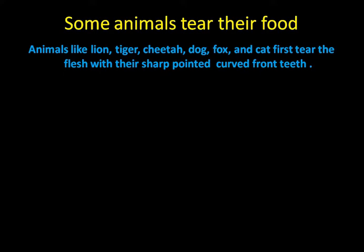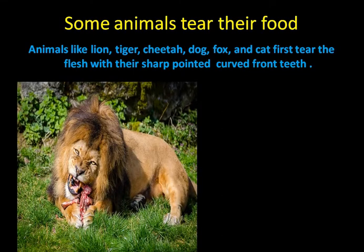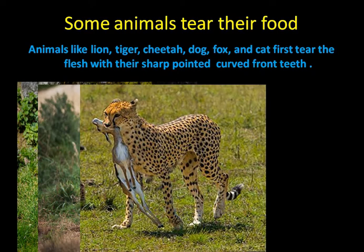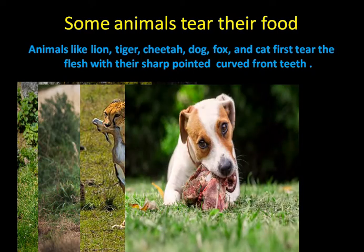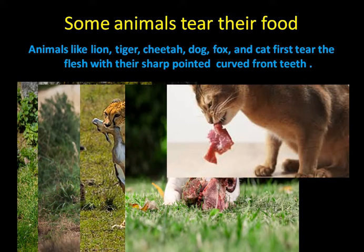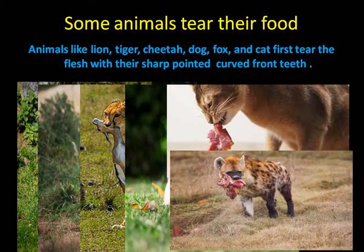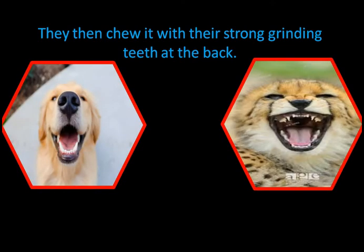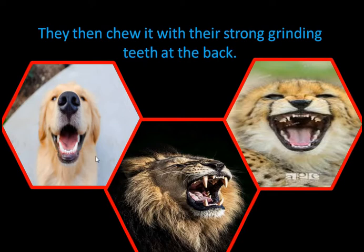There are some animals which tear their food. Tearing means they just take out the flesh of the other animal — like the way you tear paper, they tear the skin of other animals. Animals like lion, tiger, cheetah, dog, fox, cat etc. first tear the flesh of other animals with their sharp and pointed curved front teeth, then they chew it, grind it and eat that flesh. They have got strong grinding teeth at the back to chew the food.